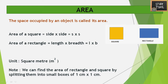In this chapter we'll be dealing more with squares and rectangles. The area of a square is side into side. For example, if the side is 2 centimeters, then the area is 2 into 2.